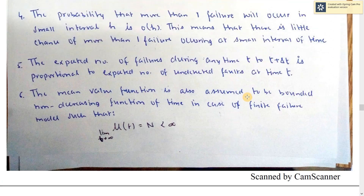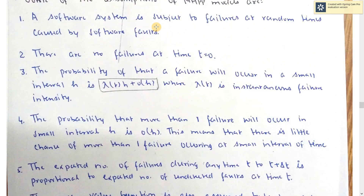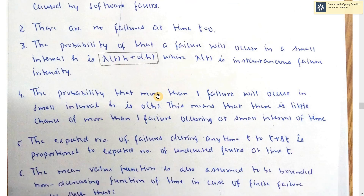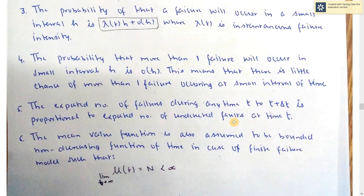So there are assumptions divided into finite and infinite parts. These assumptions are: 1. Failures occur at random times. 2. At t equal to 0, there are no failures. 3. The probability of failure is lambda(t)·h + O(h), where lambda(t) is instantaneous failure intensity and O(h) is the probability of more than one failure in a small interval. 4. Failures in time t to t plus delta-t are directly proportional to undetected faults. 5. The mean value function is a bounded, non-decreasing function of time.